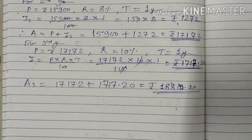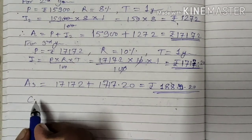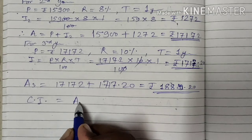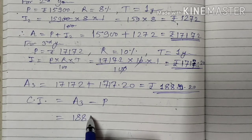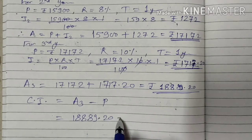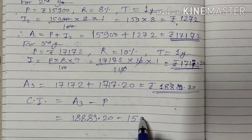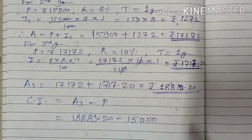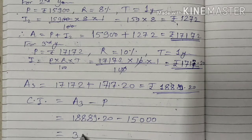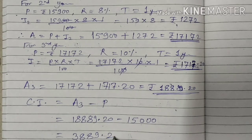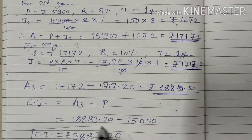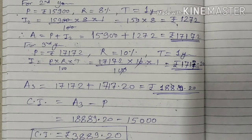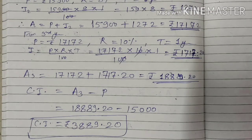This is Amount 3. Now the compound interest after 3 years is the final amount minus the principal. That is 18,889.20 minus 15,000 — we take the original principal here. So it will be Rs. 3,889.20 as the compound interest. This is the final amount minus principal.